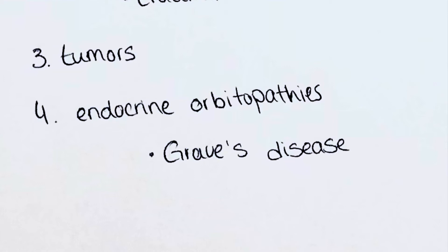The third group comprises all neoplastic and tumour growths in the area of the orbita. The fourth and last group involves endocrine orbitopathies such as Graves' disease and other autoimmune disorders concerning the thyroid gland.